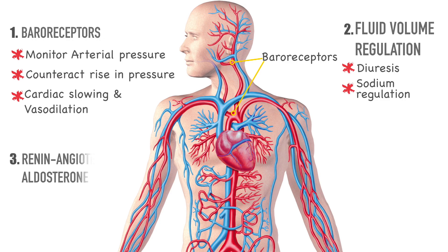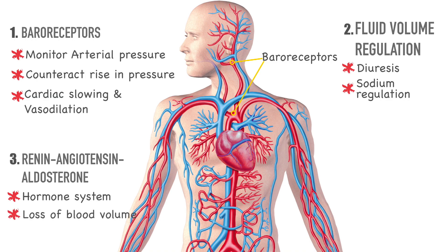Number three, we have the renin-angiotensin-aldosterone system. Just keep in mind that the kidneys produce an enzyme called renin that acts on angiotensin to promote the formation of a protein called angiotensin-1, which is converted by another enzyme in the lungs to form angiotensin-2. Angiotensin-2 is a potent vasoconstrictor of all blood vessels — it acts on the smooth muscle by raising vascular resistance, which in turn raises blood pressure. This system is usually activated by a decrease in arterial blood pressure related to a decrease in blood volume.